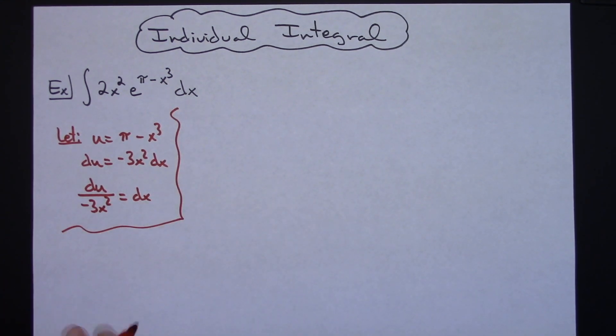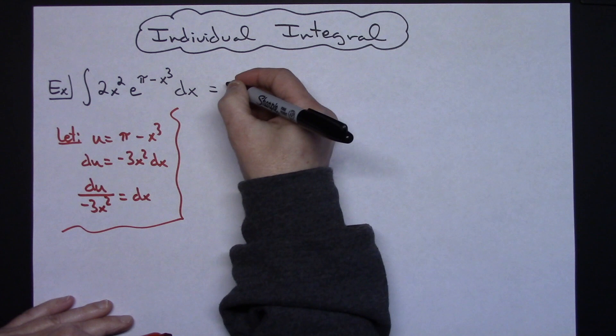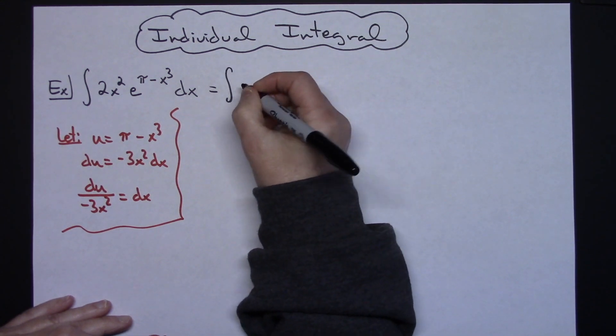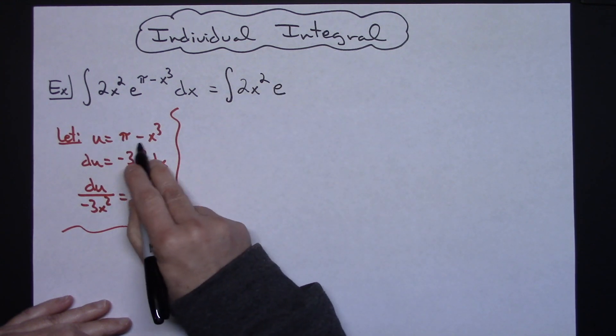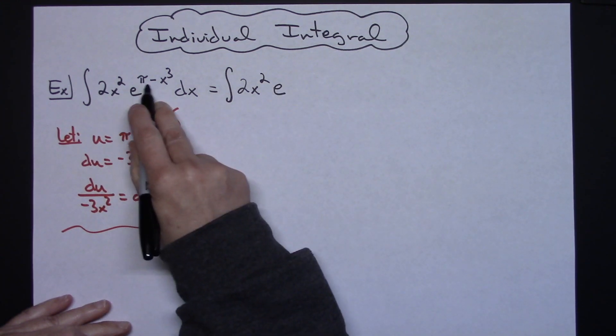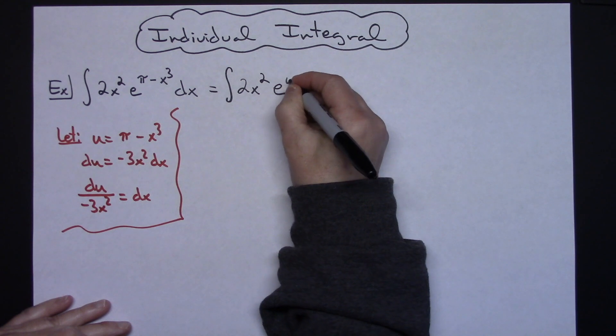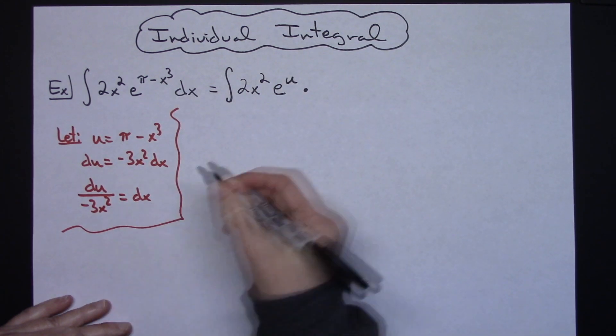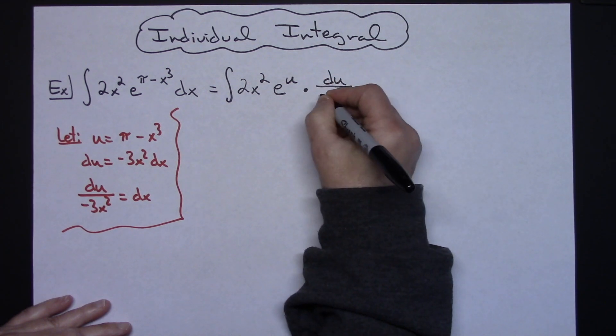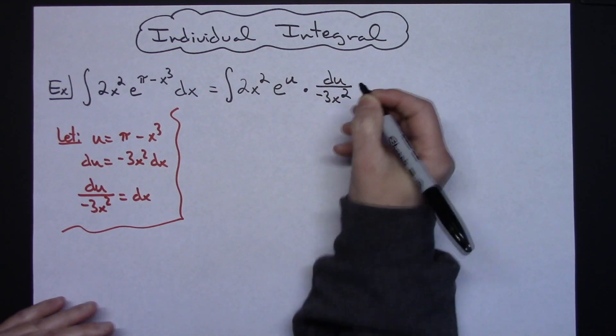And I'm going to come back up to the original problem and I'm going to do some substitutions here. So I will have the integral of 2x squared e. Now I let u be the pi minus x to the third so we'll put a u up there. And I'll replace my dx with what we said it was going to equal. So du over a negative 3x squared.